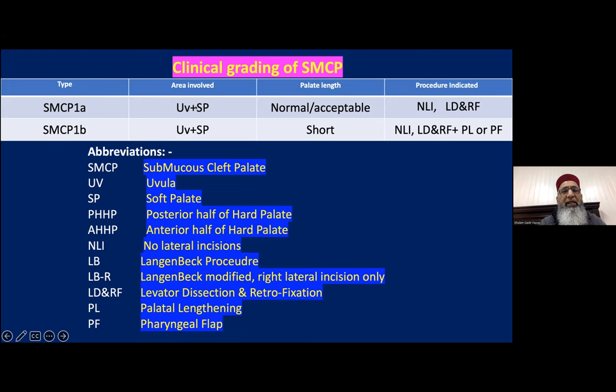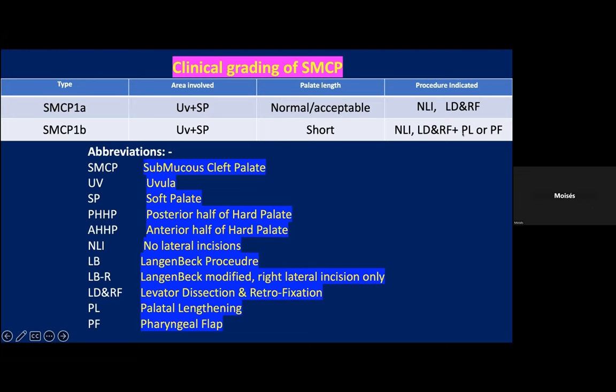In our classification, submucous cleft palate 1A involves the uvula and soft palate with normal palate length — no lateral incision is made; we perform levator dissection and retrofixation. Type 1B is when the palate is short — again, no lateral incision; levator dissection and retrofixation are performed. If the patient is less than 4 years old, we do palatal lengthening; if older than 4 years, we add a pharyngeal flap at the same stage.